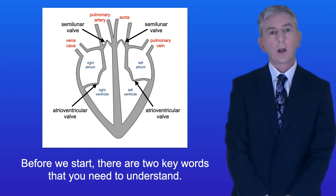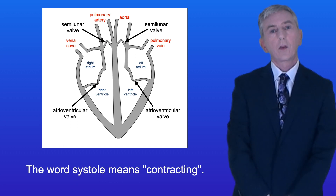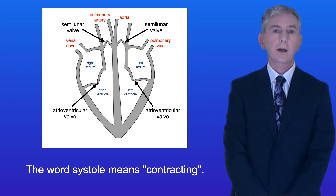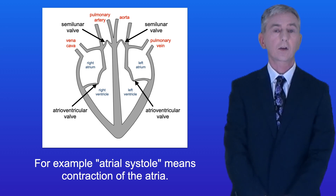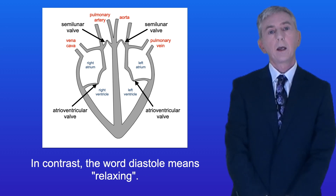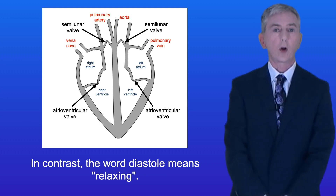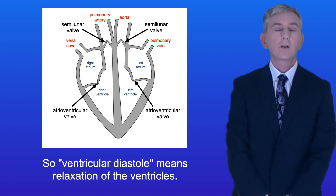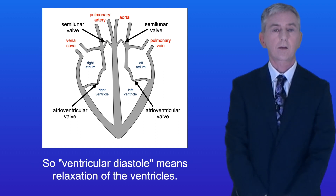Before we start there are two key words that you need to understand. The word systole means contracting, so for example atrial systole means contraction of the atria. In contrast the word diastole means relaxing, so ventricular diastole means relaxation of the ventricles.